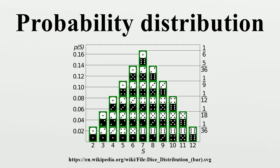Cumulative distribution function: because a probability distribution on the real line is determined by the probability of a scalar random variable X being in a half-open interval, it increases only by jump discontinuities — that is, its CDF increases only where it jumps to a higher value, and is constant between those jumps. The points where jumps occur are precisely the values which the random variable may take.